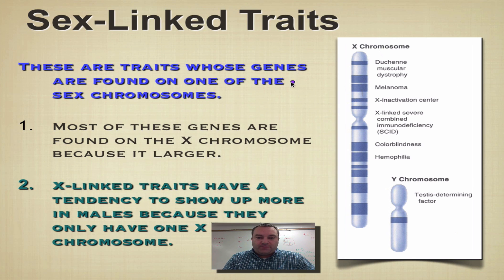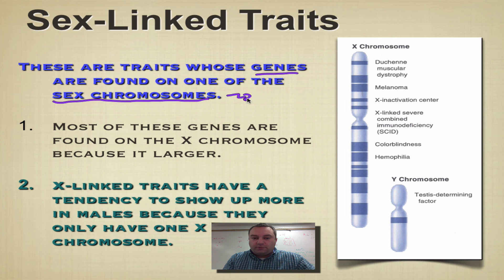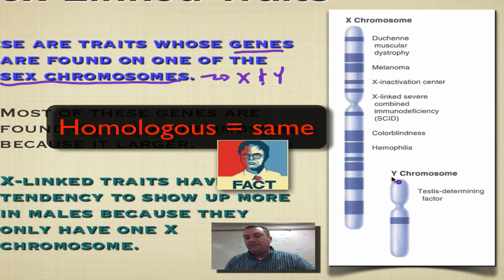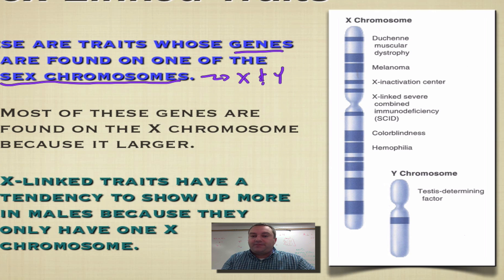What is a sex-linked trait? Basically, this is a trait where the genes for that trait are found on a sex chromosome. The sex chromosomes are called the X and the Y. We've got a picture of an X chromosome and a Y chromosome — notice the size difference. This is the only pair of chromosomes that are not truly homologous. The Y is not the same as the X, because if they were, we would give them the same name. Because the X chromosome is so big, we can put some genes on it.